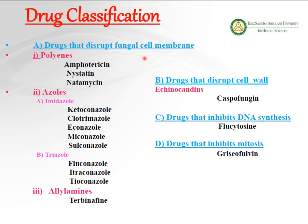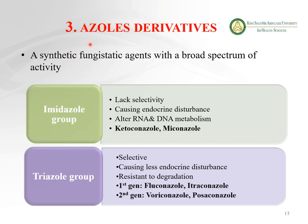The next class of fungal cell membrane inhibitors is the azoles — imidazoles and triazoles. These are synthetic fungistatic agents with a broad spectrum of activity. They are chemically composed of two groups: imidazoles and triazoles.